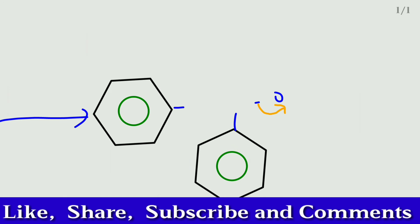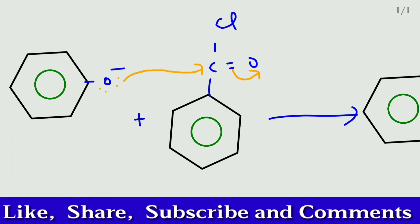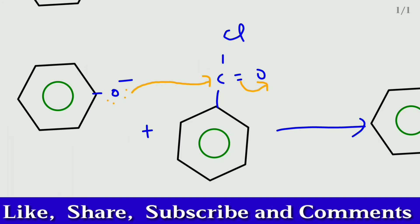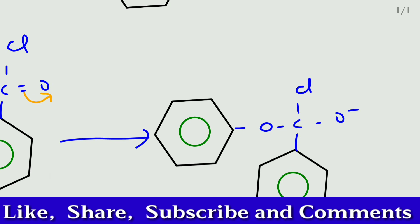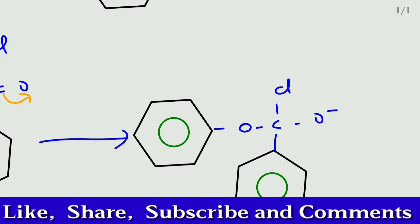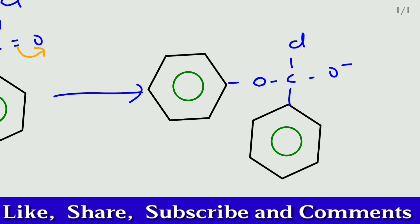We can get C6H5O-C-O minus and Cl. This is the second step. In this second step, what happened? The oxygen contains a lone pair of electrons, it attacked the carbonyl carbon and the C double bond O becomes single bond and the oxygen becomes O minus.